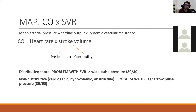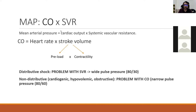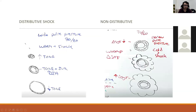Cardiac output is what the heart is doing; Systemic Vascular Resistance (SVR) is how much resistance the entire body is going through. The main two types of shock I categorize are distributive and non-distributive. In distributive shock there's a problem with SVR — it decreases, causing vasodilation. In non-distributive shock there's a decrease in cardiac output — the heart isn't pumping enough blood.